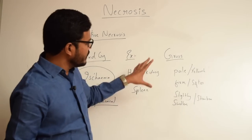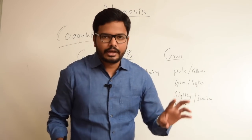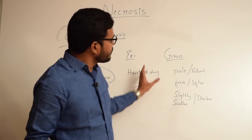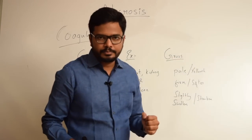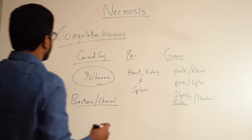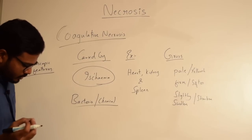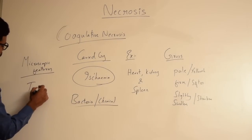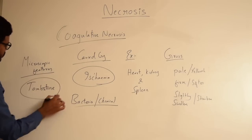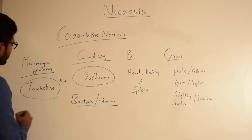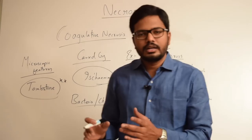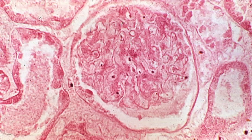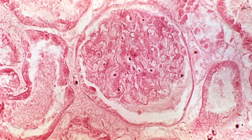These gross changes help us identify foci of coagulative necrosis. Initially they appear pale, firm, and slightly swollen, but as they progress they appear more yellowish, softer, and shrunken. Coming to the microscopic changes, the hallmark sign for identification of coagulative necrosis is the tombstone appearance. A normal cell is converted into its corresponding tombstone — that is, presence of an intact cell wall with loss of inner material, either the nucleus or cytoplasm.